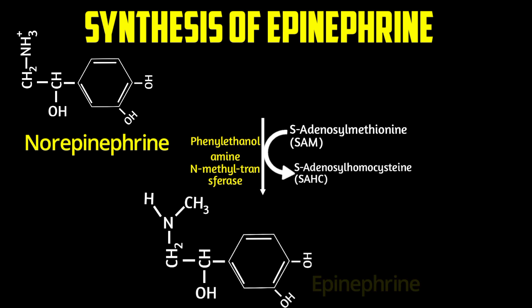Epinephrine differs from norepinephrine by the addition of a methyl group. A methyl group is transferred from SAM (S-adenosylmethionine) to the nitrogen of norepinephrine to form epinephrine. So the only structural difference between norepinephrine and epinephrine is that methyl group.